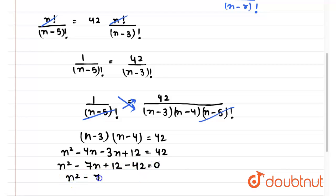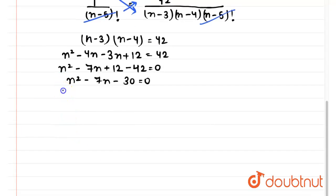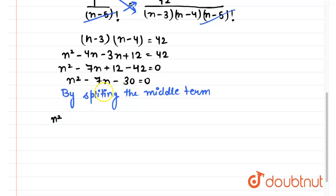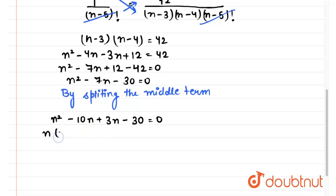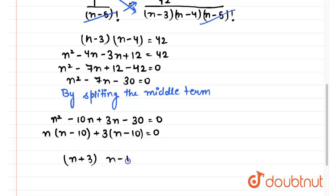We have n squared minus 7n minus 30 equals 0. Now we will solve this by splitting the middle term — we split the middle term such that the sum of the two numbers is minus 7 and the product is minus 30. So we get n squared minus 10n plus 3n minus 30 equals 0. Taking n common from the first two terms gives n(n minus 10), and taking 3 common from the last two terms gives 3(n minus 10). So the two factors are (n plus 3) and (n minus 10).